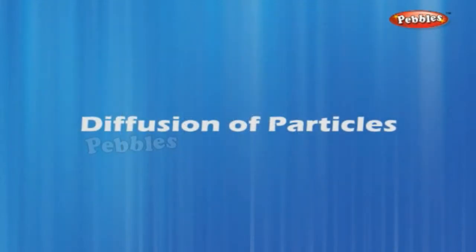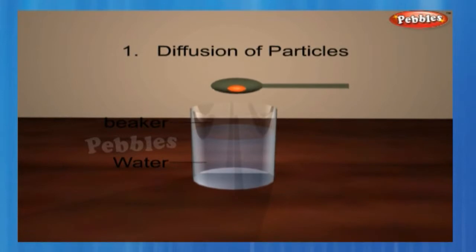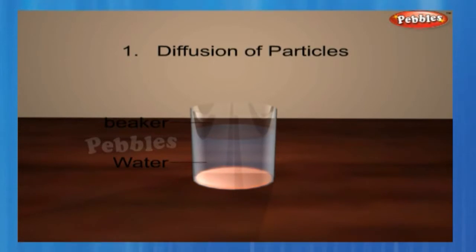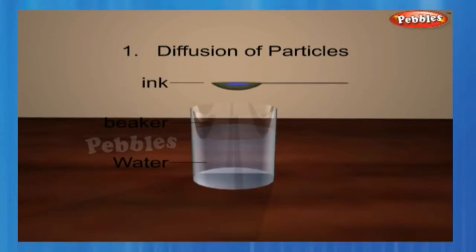Diffusion of particles. Take two glasses or beakers filled with water. Put a drop of blue or red ink slowly and carefully along the sides of the first beaker, and honey in the same way in the second beaker. Leave them undisturbed in your house or in a corner of the class. Record your observations — what do you observe immediately after adding the ink drop, and immediately after adding a drop of honey?